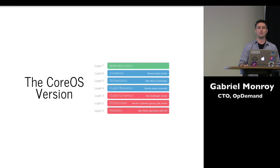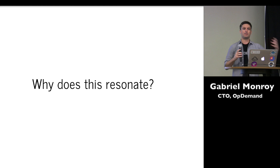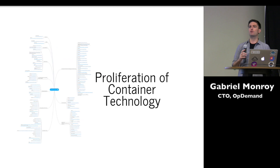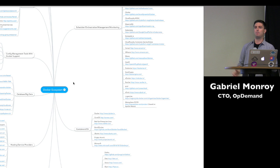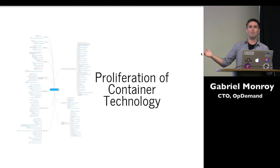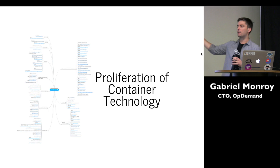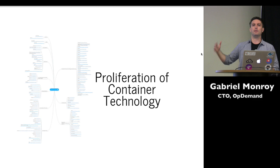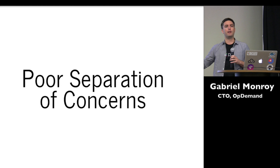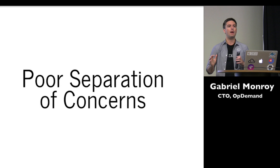Why does this idea of a stack diagram resonate so much? I really think there are two reasons. The first is there's this proliferation of container technology being brought out today — there's a mind map of the Docker ecosystem from Krish at Red Hat, and you can't really see it because there's just so much stuff going on that it's overwhelming. This proliferation is actually a good thing — it's about choice and innovation. The problem is we have poor separation of concerns. There's too much duplicating of work and projects that slightly overlap with each other in even the open source space, and it makes it really difficult to build composable systems.